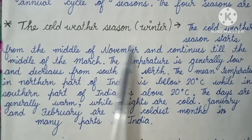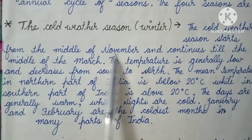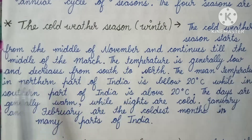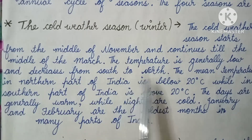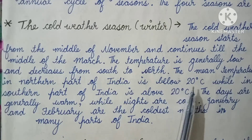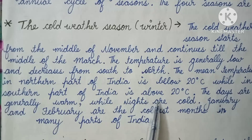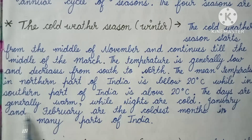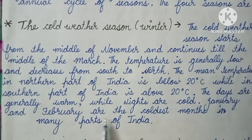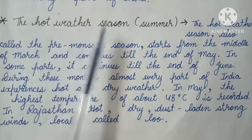The first season is the cold weather season — Winter. It starts from the middle of November and continues till the middle of March. The temperature is generally low and decreases from south to north. The mean temperature in the northern part of India is below 20 degrees Celsius, while in the southern part it is above 20 degrees Celsius. The days are generally warm while nights are cold. January and February are the coldest months in many parts of India.